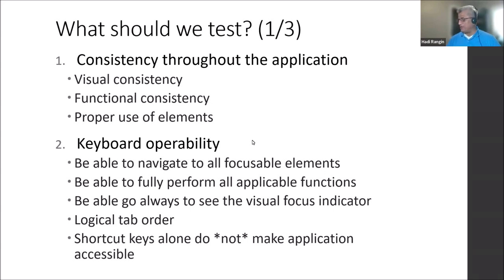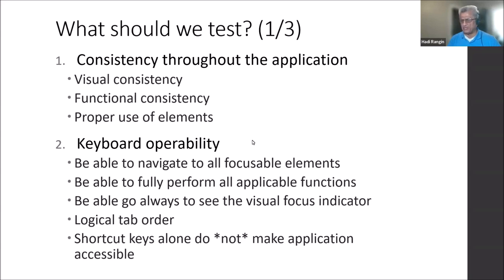If you have to travel 60 times from A to B to perform the next action, you can question whether the task is functionally accessible. Technically you might be able to do it, but if you have 15 steps and every time you must press many tab keys to move from one element to another, you can question the functional accessibility of the application.